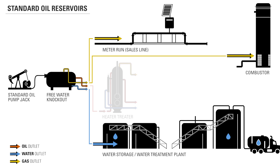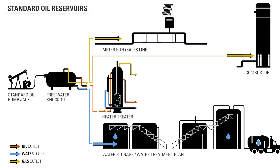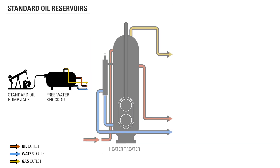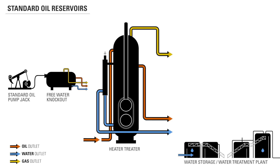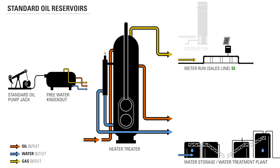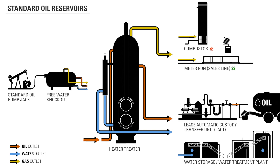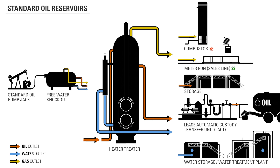The second stage of separation for an oil reservoir will typically happen in a heater-treater. In this vessel, heat is used to accelerate the separation process and continue refining the produced emulsion into its three components. As they exit the heater-treater, the water is again piped to storage. The gas will either travel to a sales line through a meter run or is destroyed in a combustor if quality parameters are not being met. The oil will continue to either an automatic custody transfer unit or storage to await midstream transportation.